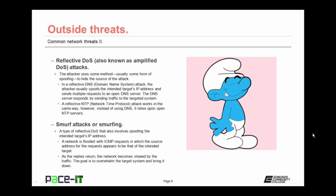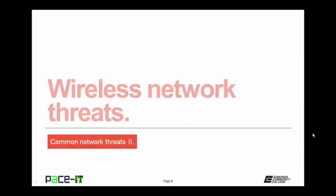Not very common anymore, but you still need to know about SMURF attacks, also known as SMURFing. It's a type of reflective denial of service attack that also involves spoofing the intended target's IP address. A network is flooded with ICMP requests in which the source address appears to be that of the intended target. As the replies return, the network becomes slowed down by the traffic. The goal is to overwhelm the target system and bring it down.